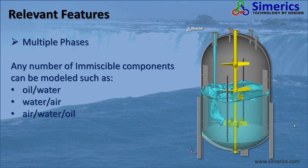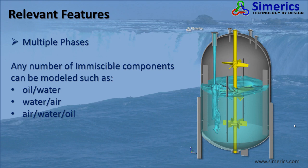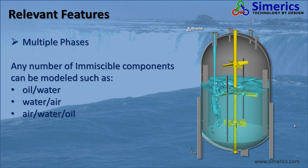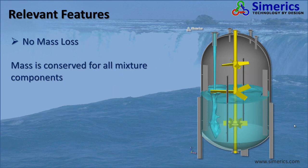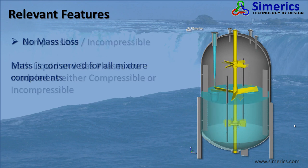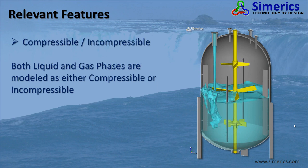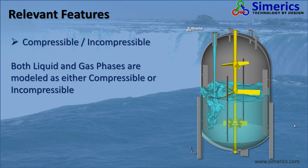Let me elaborate on what these features accomplish. Multiphases: any number of immiscible components can be modeled, such as oil and water, water and air, and air, water, and oil. No mass loss: all mass is conserved for all components, indicating that physical laws are obeyed. Compressible and incompressible: the software accounts for the compressibility of both liquid and gas phases.